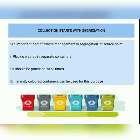Whatever the type, collection should start with segregation — that is, placing waste in separate containers. Differently colored bins can be used for this purpose; for example, green colored bins are normally used for biodegradable waste like kitchen waste. It is necessary to practice segregation at all times because it makes the collection process easier and helps collectors differentiate waste and take necessary precautions while handling toxic substances.